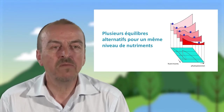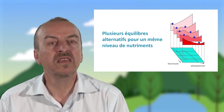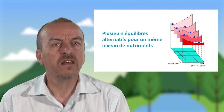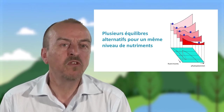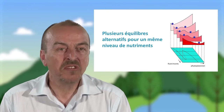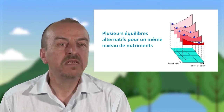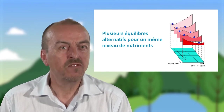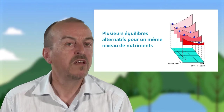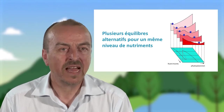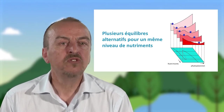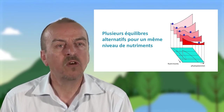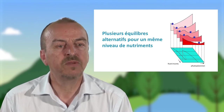Si on augmente encore les nutriments, il n'y a plus qu'un seul état d'équilibre possible qui est un état d'eau turbide, donc très riche en algues. Cela veut dire que si jamais on veut réduire la biomasse algale — ce qui est souvent une priorité pour des gestionnaires dans les milieux lacustres — on a deux possibilités. D'une part, il faut réduire les intrants, il faut réduire les apports en phosphore, c'est ce qui se fait actuellement avec les stations d'épuration. D'autre part, on peut jouer sur les chaînes alimentaires en essayant de favoriser des chaînes avec des piscivores qui permettent un meilleur contrôle du phytoplankton.